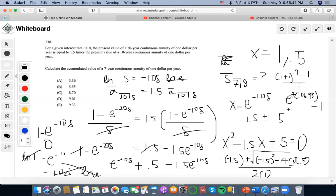So e to the 7 times 0.0693 minus 1 over 0.0693. I do e to the 7 times 0.0693 minus 1 over 0.0693, then I'll get 9 as the answer, which would make it choice D.